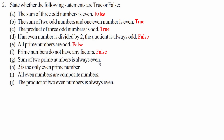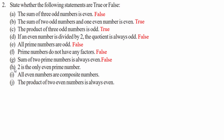Statement g — the sum of two prime numbers is always even. Taking 2 plus 5 equals 7, which is an odd number, therefore statement g is false. Statement h — 2 is the only even prime number. This statement is correct; 2 is also the smallest prime number. Therefore statement h is true.